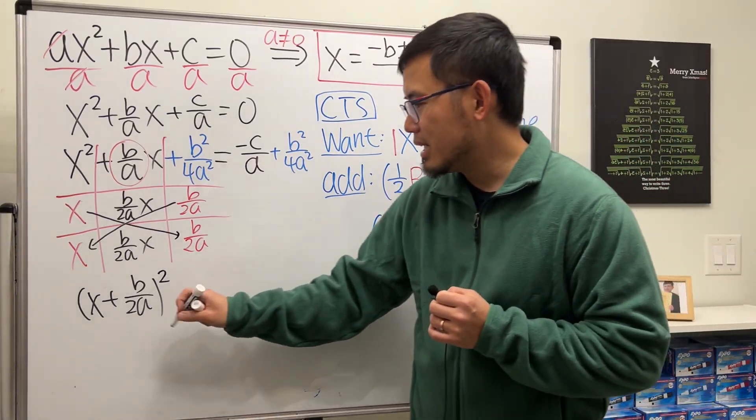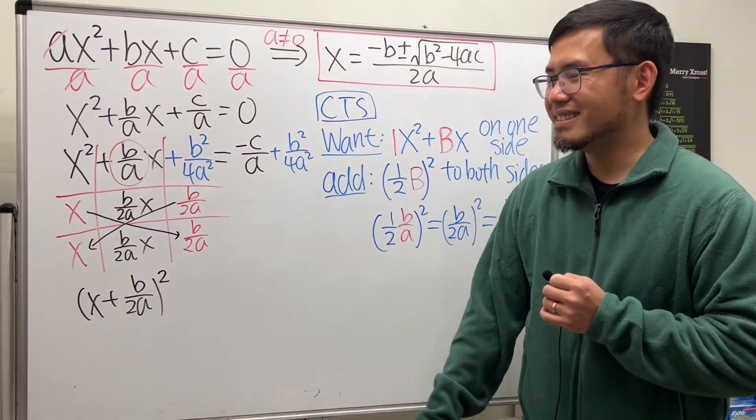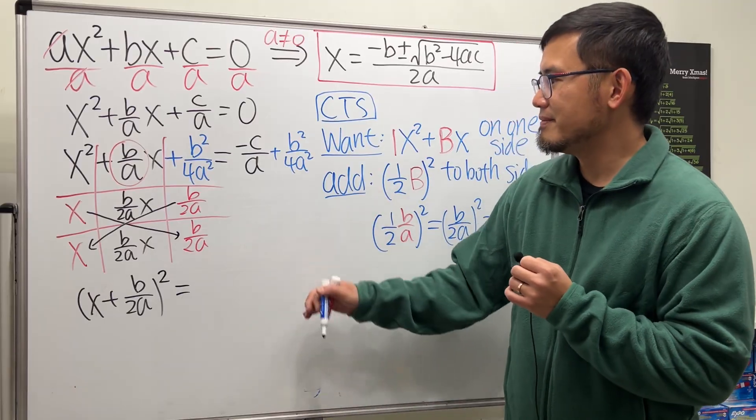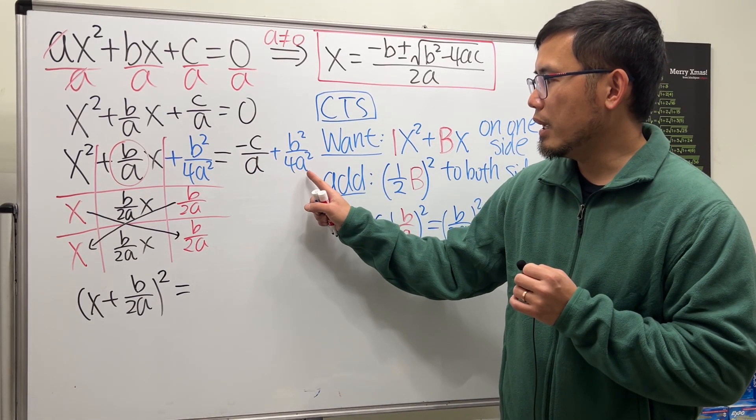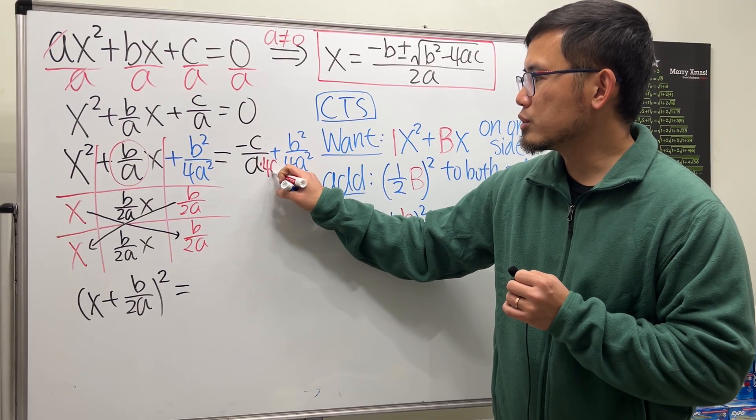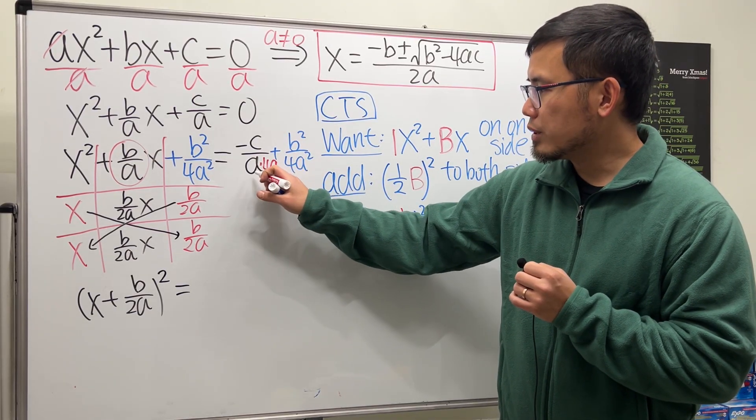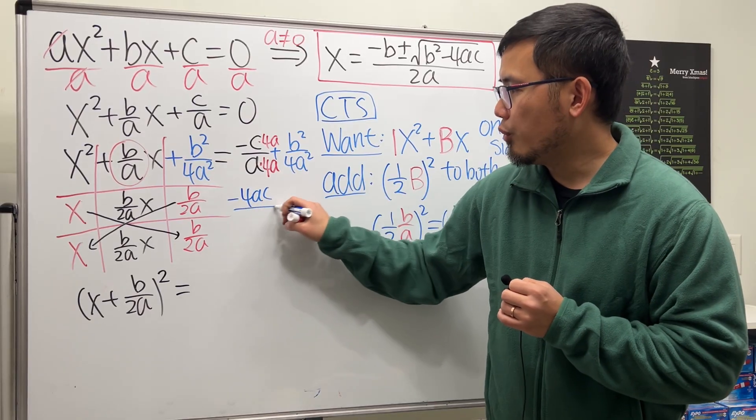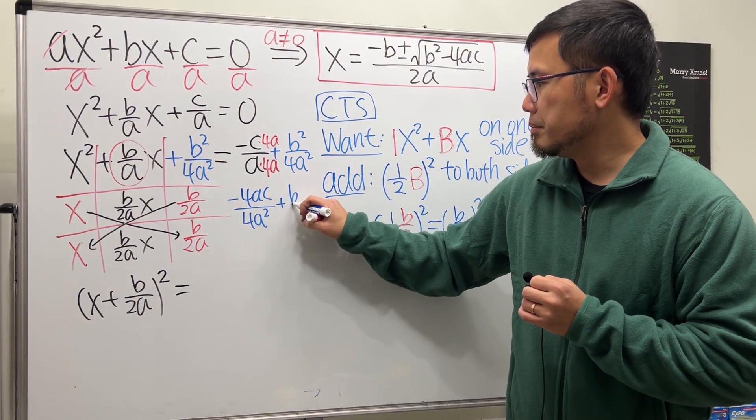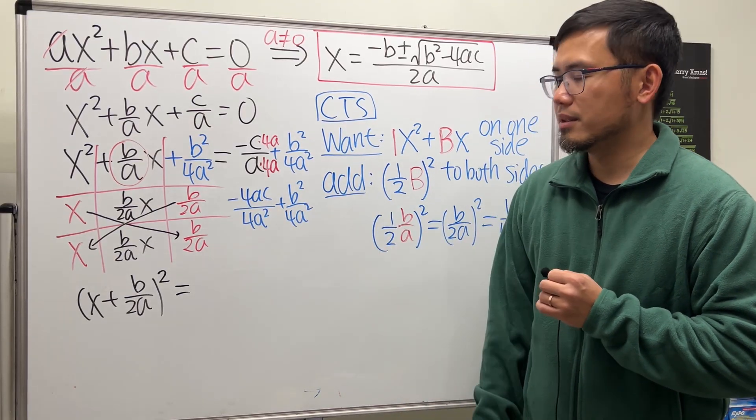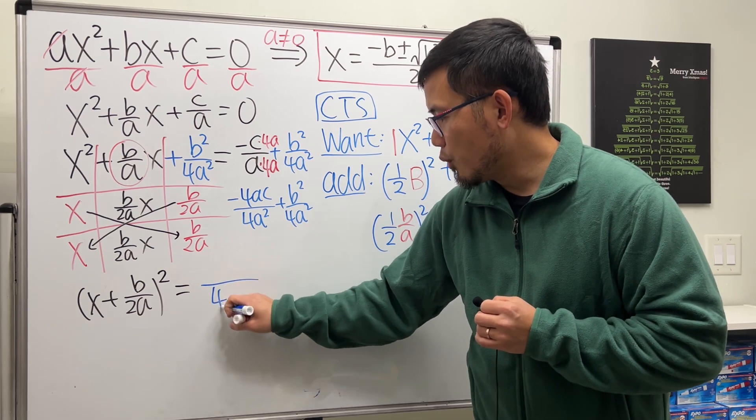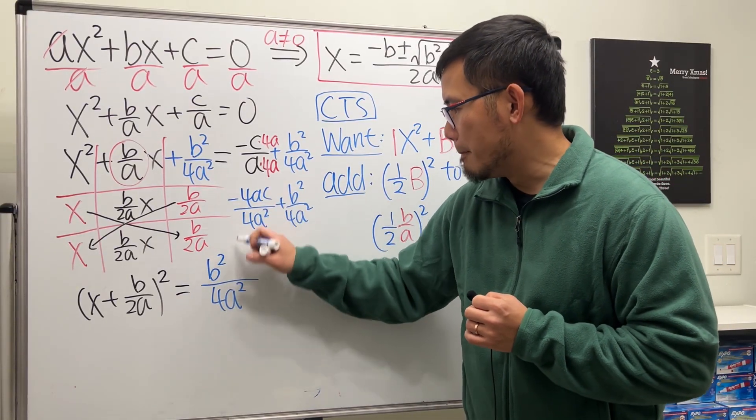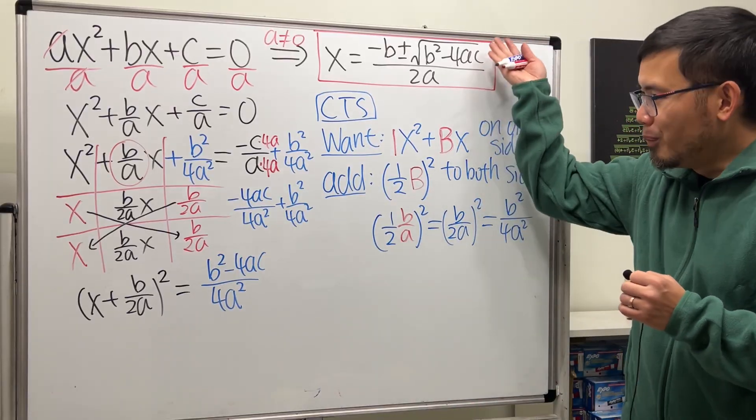Of course, there's also a geometry meaning for that, but maybe for another day. Now for the rest, let's put them together. For this right here, let's just go ahead and get a common denominator. This has a, this has 4a². So we need to have 4 right here and also one more a. So let's multiply 4a to the bottom and also to the top. Then we see this is -4ac/4a² plus b²/4a². Combine them. We have 4a² on the bottom. And we like to write the b² first. So put down b² - 4ac. We are almost there.